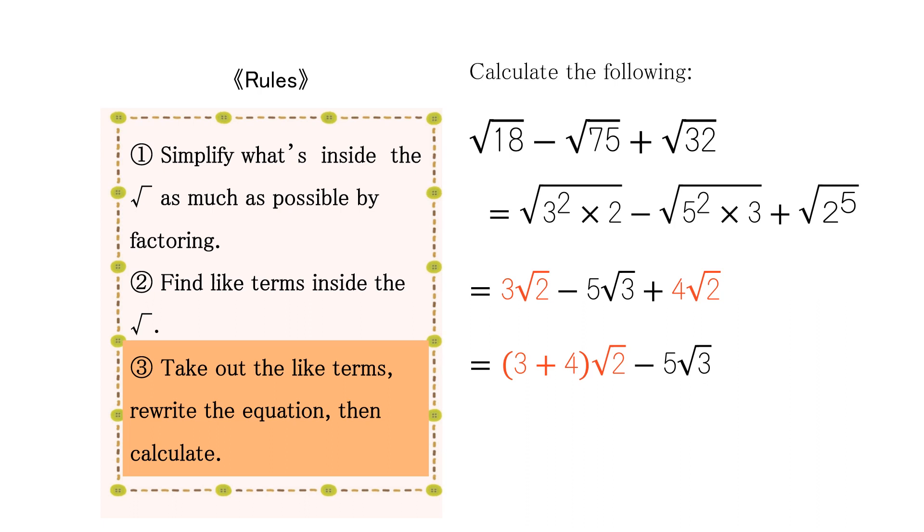After taking out the like terms, we rewrite the equation, then calculate. We end up with the solution: parentheses 3 plus 4 parentheses square root of 2 minus 5 square root of 3.